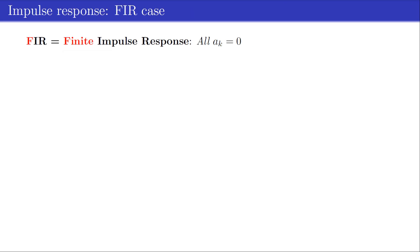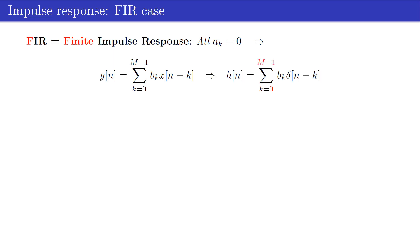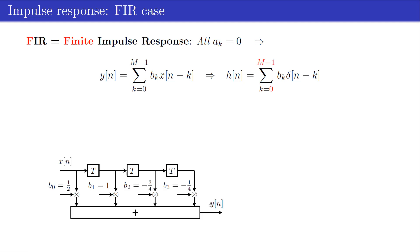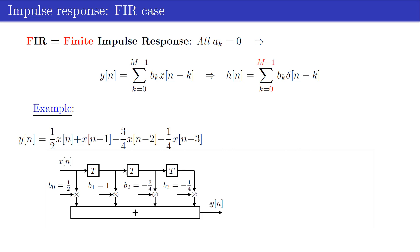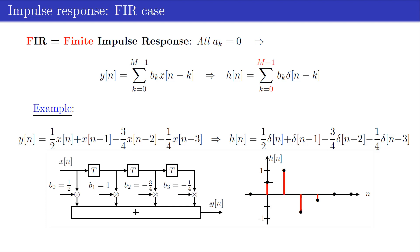In case all feedback coefficients are zero, the LTI system represents a finite impulse response filter, abbreviated as FIR filter. The difference equation is a finite sum of weighted and delayed input samples. By substituting xn = δn, we obtain an expression for the impulse response hn, which has finite length. Moreover, the M impulse response values h0 until h(M−1) are the same as the M filter coefficients b0 until b(M−1) for the FIR case. An example of an FIR filter is depicted in the figure, which can be described by the given difference equation. The figure also shows a plot of the impulse response.